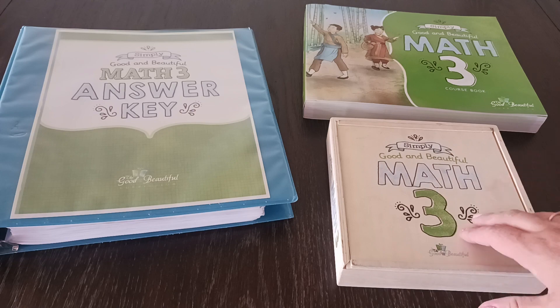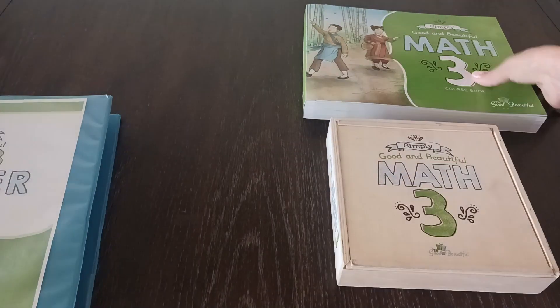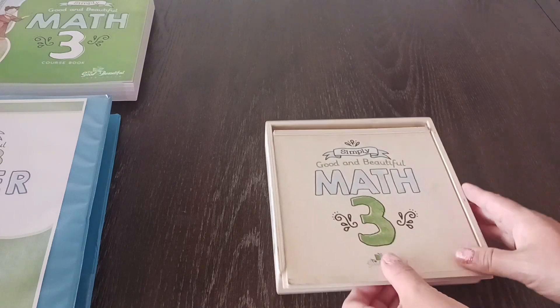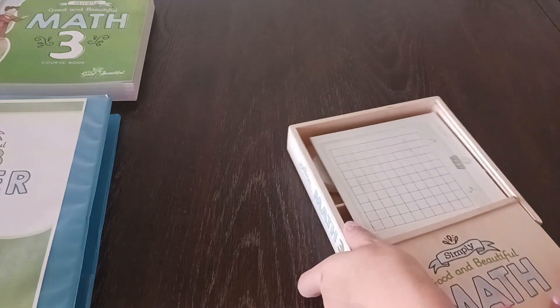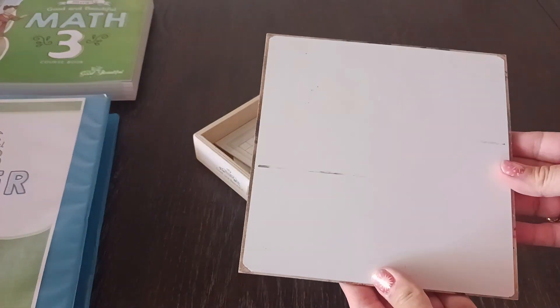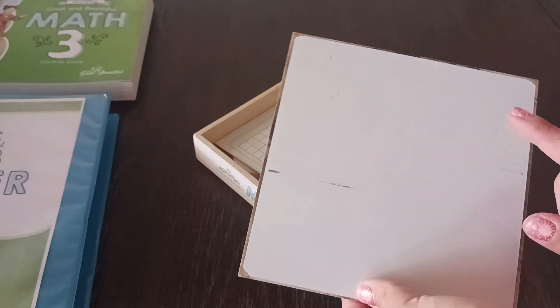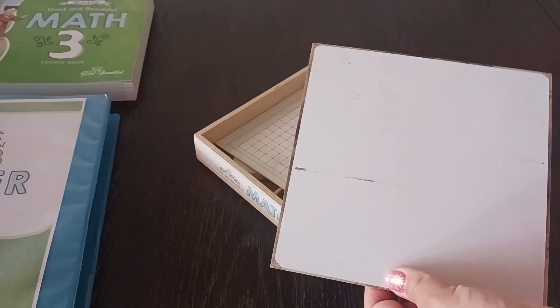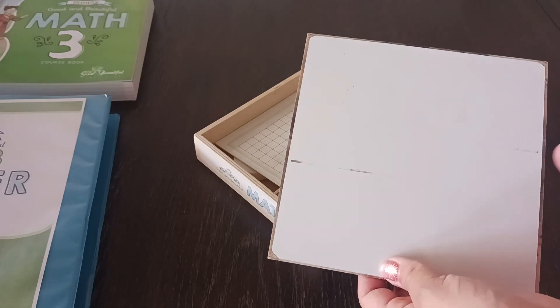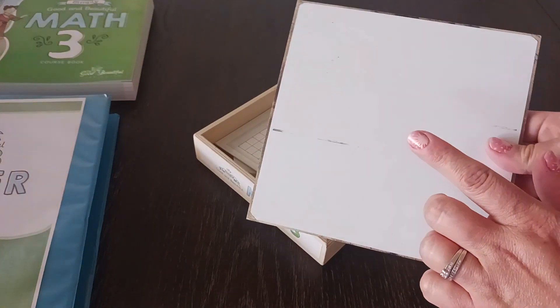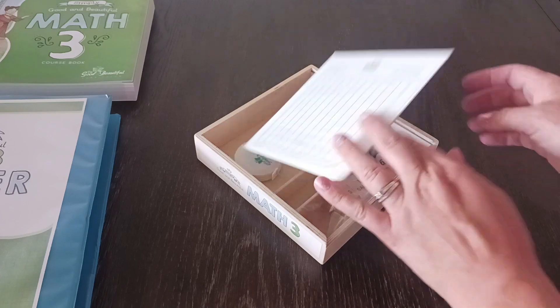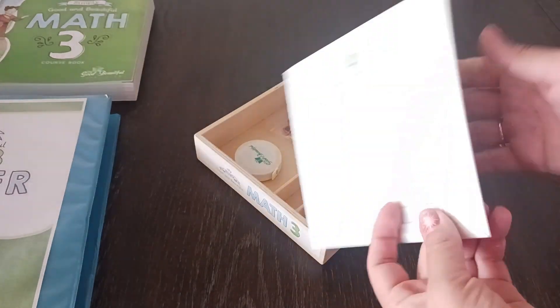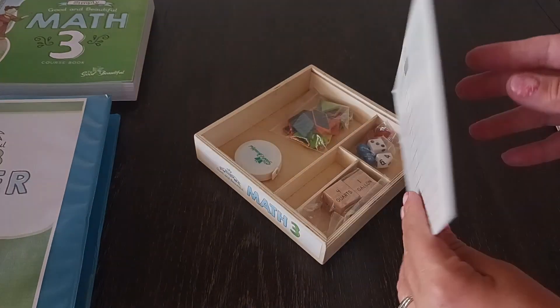So I'm going to go ahead and go through the manipulatives box first. So this is everything that's in it. It's going to come with a whiteboard. Now they did recall this because I guess the whiteboard was coming apart or something. So when you order it new, the whiteboard should be detached. It won't be attached to the lid. It's going to come with your array mat and you just use expo markers on it.